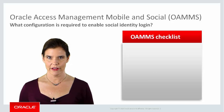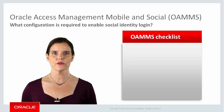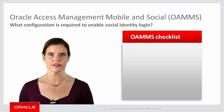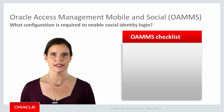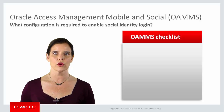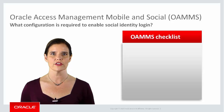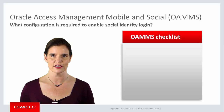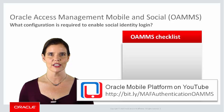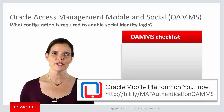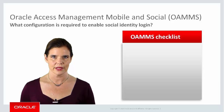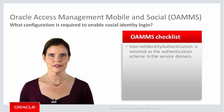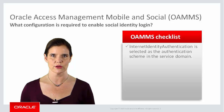Before you can set up your MAF application to use OAMMS, you should work with your OAM administrator to ensure that OAMMS is configured to serve as a relying party when interacting with internet-based identity authentication services. For more information about configuring OAMMS, watch the YouTube video called Using Oracle Mobile and Social Access Service Authentication from Oracle MAF. You can access the video through the bit.ly link shown here. When you meet with your OAM administrator, ensure that the following requirements are met.